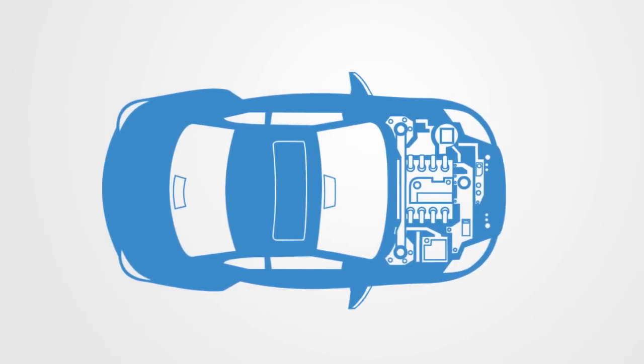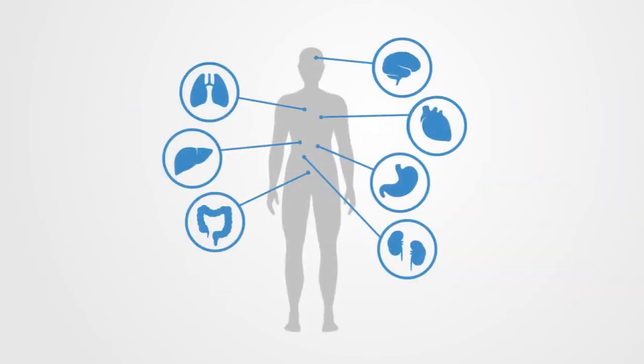For example, if all the parts in our car are arranged in a specific way, then we will have the global functionality of a vehicle of transportation. Or out of the specific arrangement of billions of cells and the different specialized organs that make up our body, we get the emergence of a global system that enables us to operate as an entire organism.